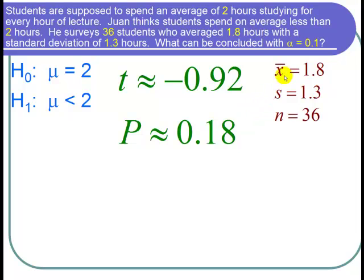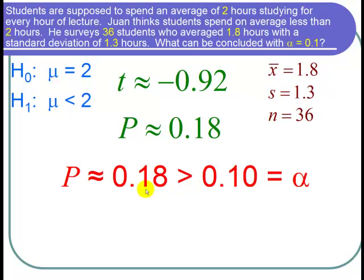What I'm interested in is comparing the p-value with the level of significance alpha 0.1. And notice that 0.18 is greater than 0.1. So the p-value is greater than the level of significance. So what I can say is that if it was true that mu was equal to 2, then there would be an 18% chance of conducting a study with the same sample size and coming up with the sample mean at or below 1.8. And 18% is a pretty big percent chance. So that means I failed to reject the null hypothesis.